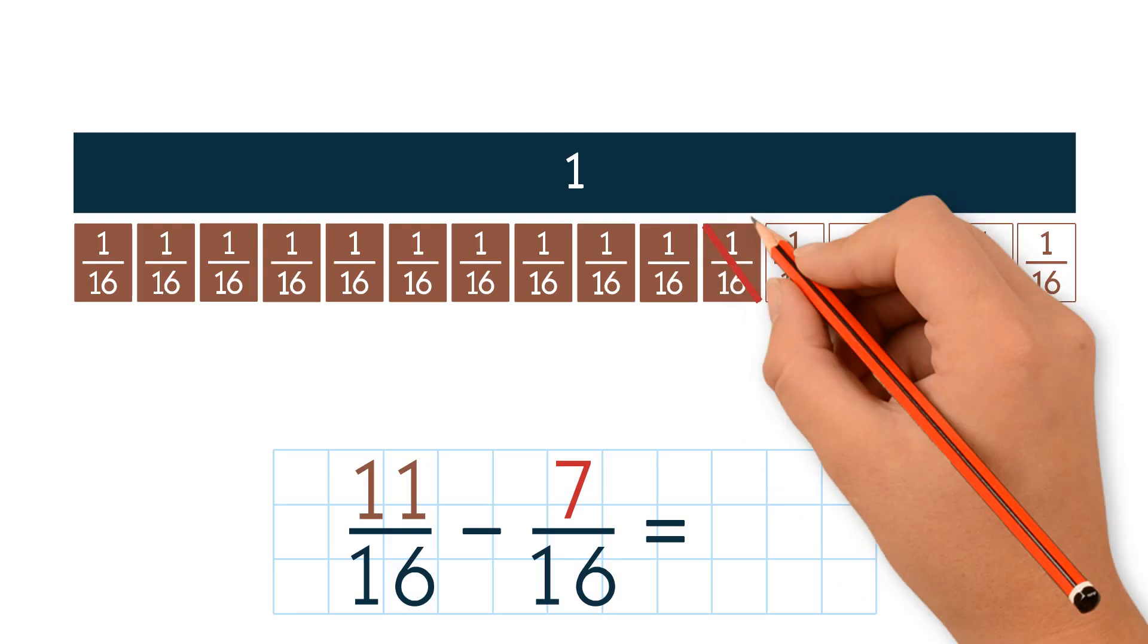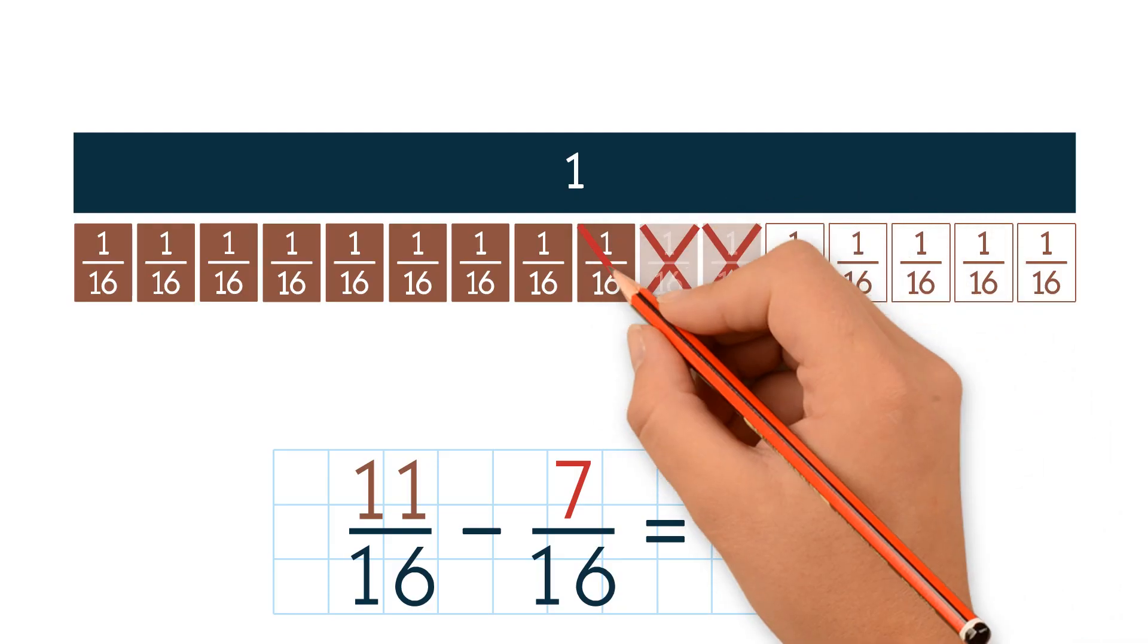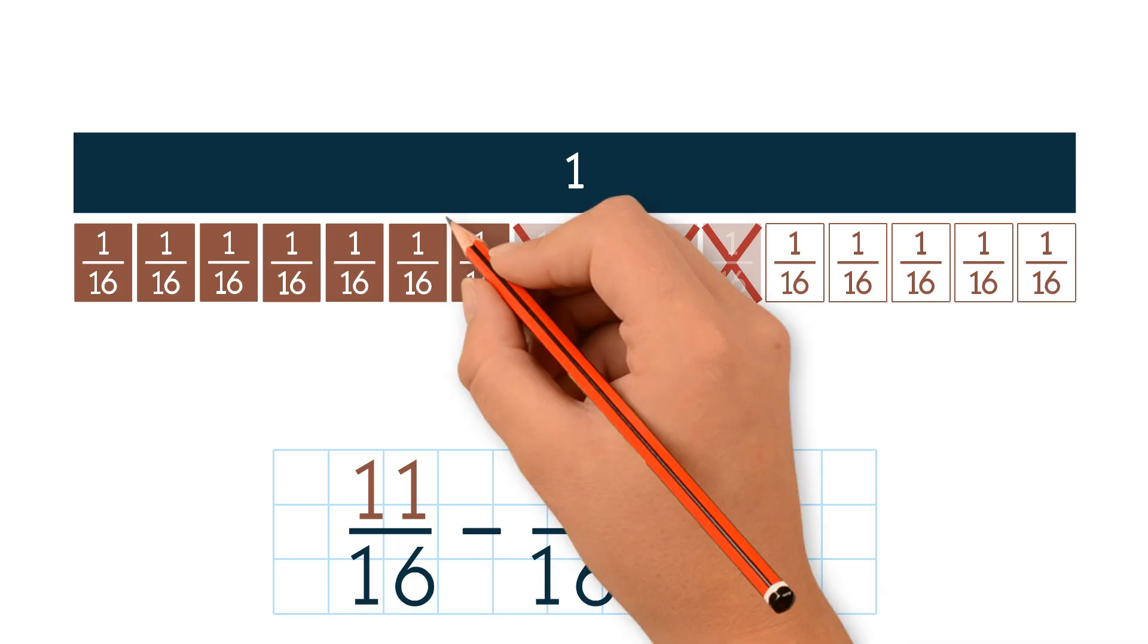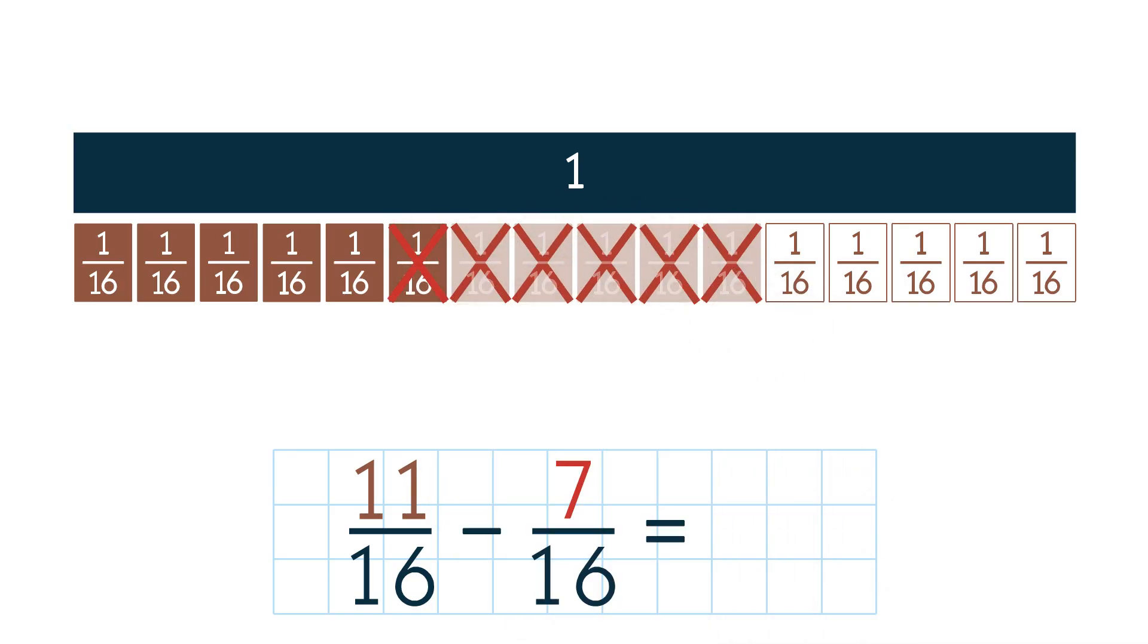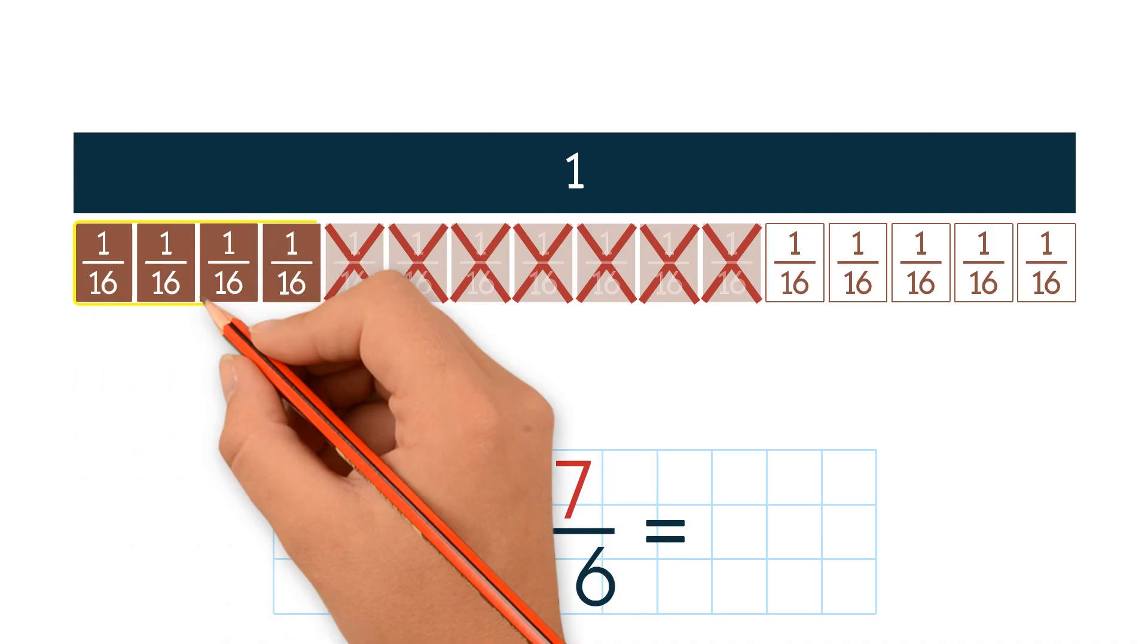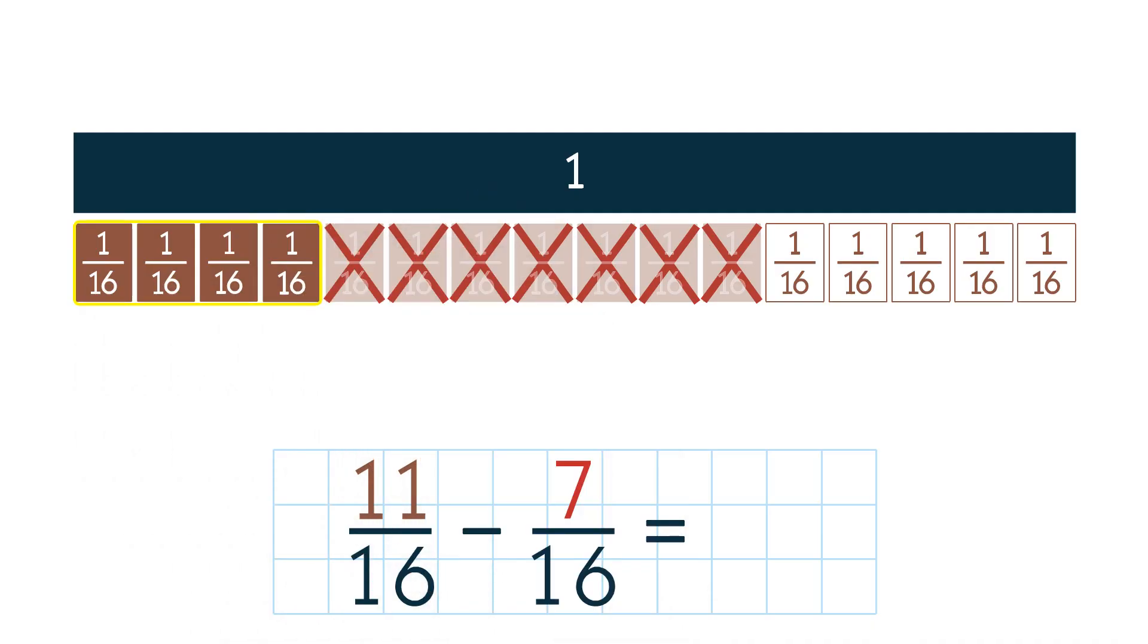Now we cross out 7 sixteenths. Count how many shaded sixteenths are left. There are 4 shaded sixteenths left. So the answer is 4 sixteenths.